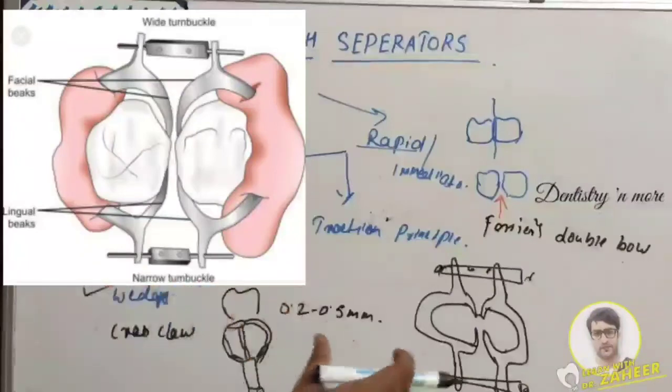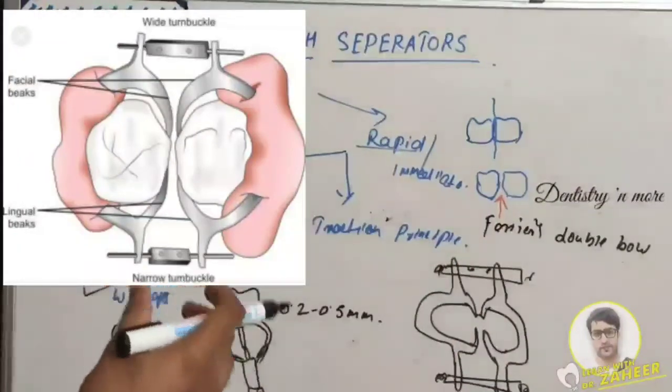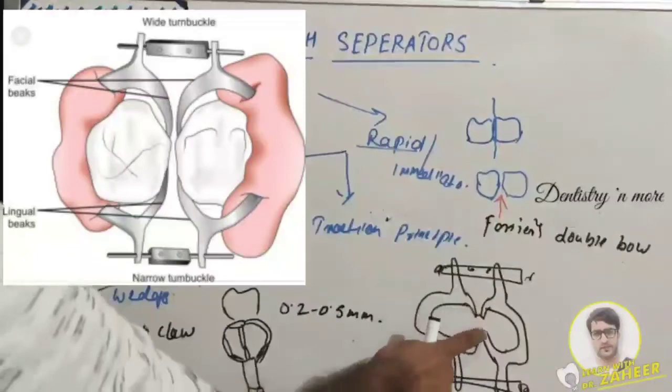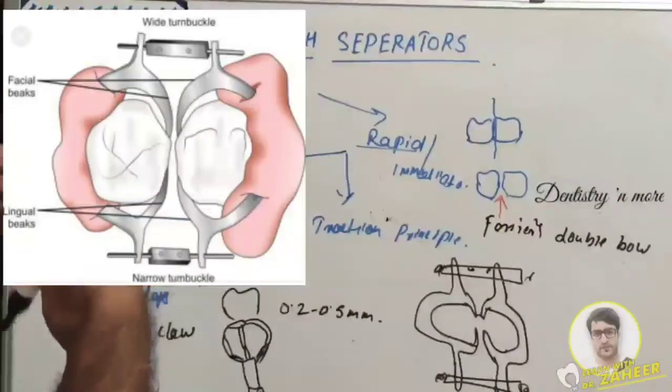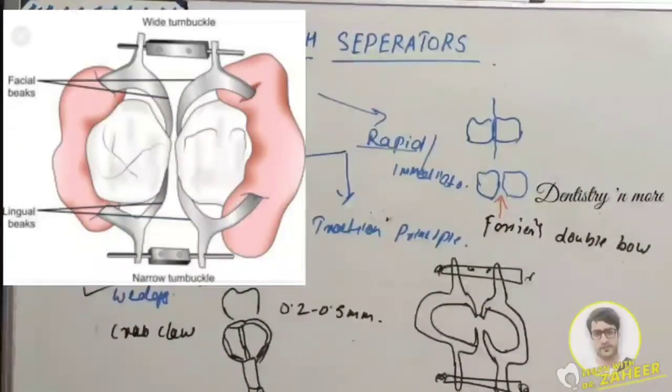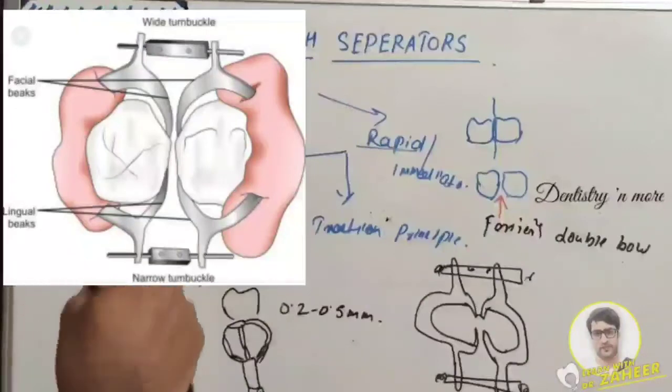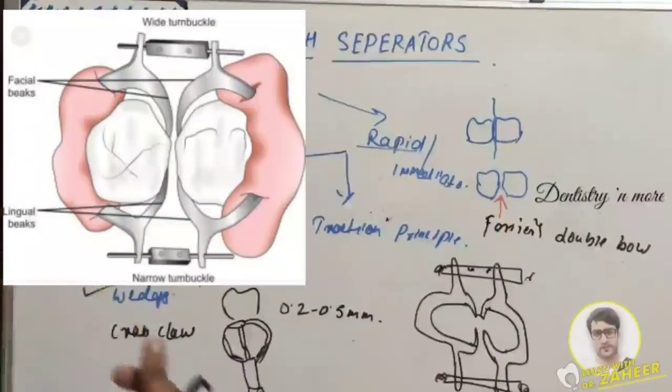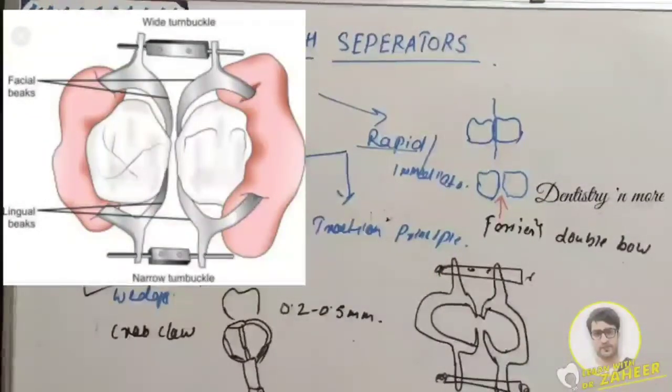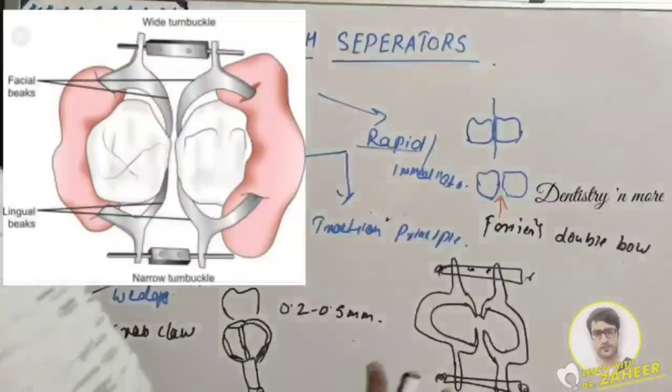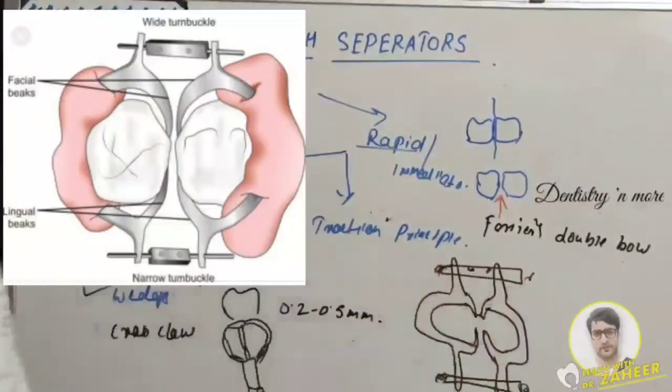It has two bows. The jaws of each bow engage the tooth surface of the contacting teeth gingival to contact area. A wrench is used to turn the threaded bars slowly to create adequate separation. The threaded bars here slowly create adequate separation.